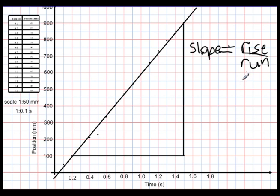So 800 millimeters divided by my run, which is 1, 2, 3, 4, 5, 6, 7, 8, 9, 10, 11, 12, 13 blocks. And my 13 blocks would put me at 1.3 seconds, given my scale.